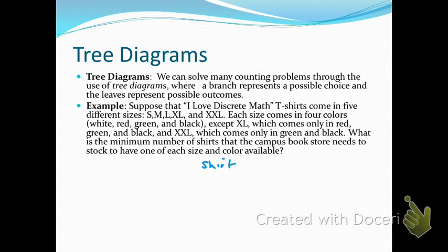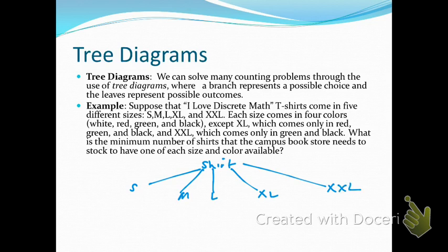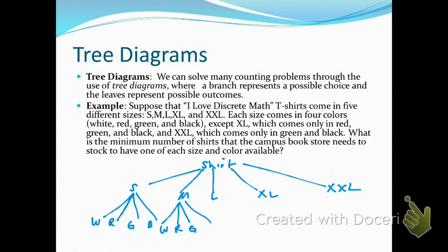The shirt is the root of the tree. We branch off with our sizes: small, medium, large, extra large, and double XL. Then each size branches into its colors. Small has white, red, green, and black. Medium has white, red, green, and black. Large also has white, red, green, and black.